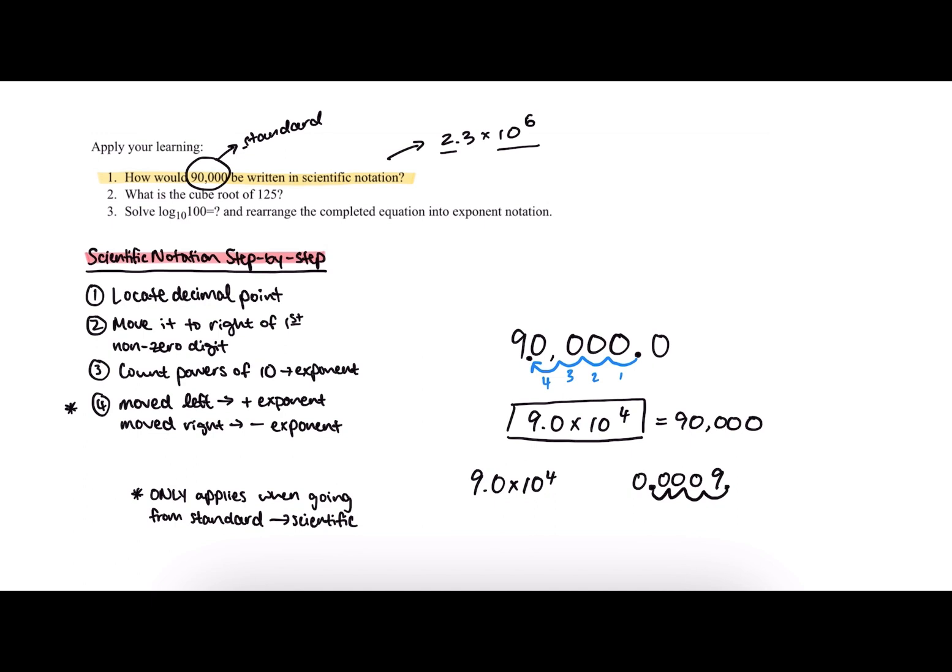Since we're going in the opposite direction this time, we need to basically flip the rule. So if we wanted to start from 9 times 10 to the fourth, we say we're going from scientific notation to standard notation, so we need to move the decimal to the right instead. And you can see that gives us our original 90,000.